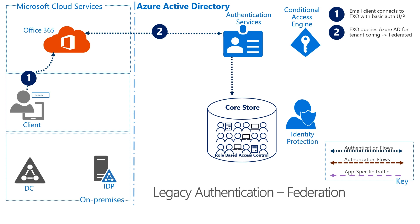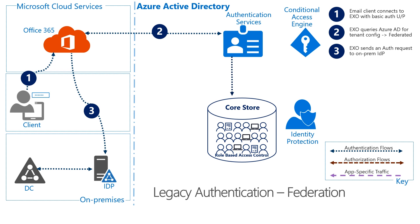Next, on Step 2, the Exchange Online Service calls out to Azure AD for the tenant configuration, and to verify if it's federated or not, using a process called Home Realm Discovery, to determine which domain you're logged in with. Once it verifies that you're federated, Azure AD lets the Exchange Online Service know to go to a set endpoint previously defined in Azure AD, based on the original configuration of Federation, with an authentication request, as illustrated here in Step 3. The Federation Server then contacts a domain controller to verify the username and password, calling Windows native APIs for that user, and sends it back to the Exchange Online Service.